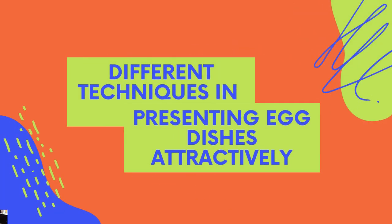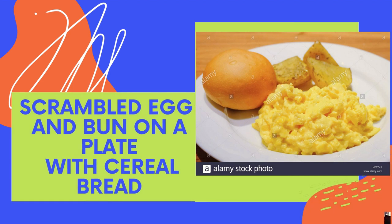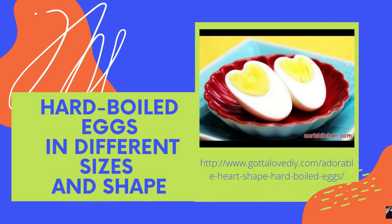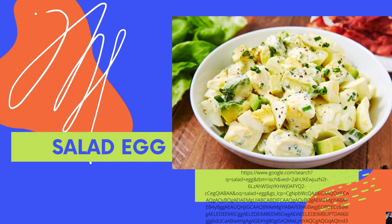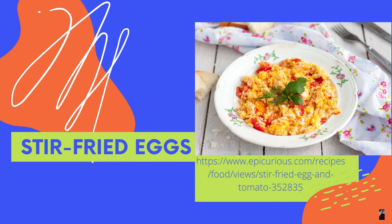The next subtopic covers different techniques in presenting egg dishes attractively. We can plate scrambled egg on a bun on a plate with cereal bread. We can also do fried egg with bacon and toasted bread. We can hard-boil eggs in different sizes and shapes. We can also do salad egg, and stir-fried eggs.